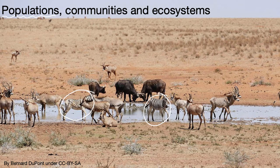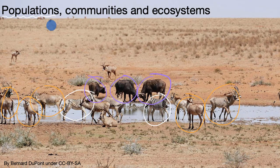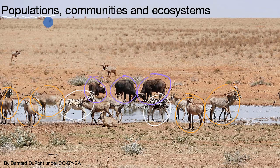Now we have other populations in this picture. We have a population of buffalo — these three are members of that population. We have a population of antelope; in fact there is a bunch of antelope in this picture, so we have many members of that population. We even see some animals in the background — if those are elephants, they could be members of a population of elephants.